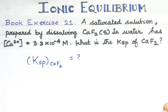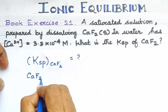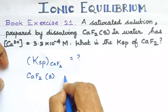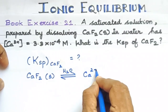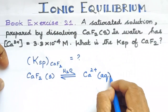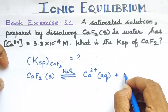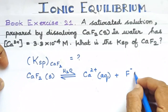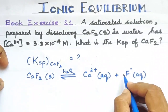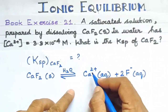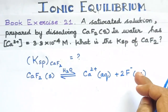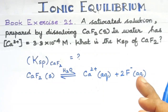How does calcium fluoride ionize when dissolved in water? We write the equation: CaF₂ (solid) dissolved in water gives calcium ions (Ca²⁺, aqueous) and fluoride ions (F⁻, aqueous). Calcium has a 2+ charge and fluoride has a minus 1 charge. So 1 calcium ion and 2 fluoride ions are formed.